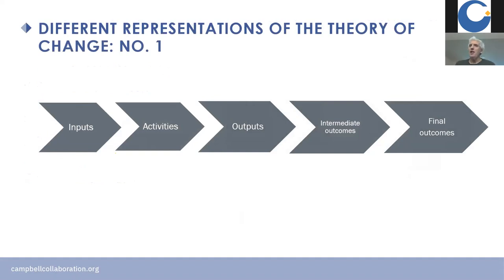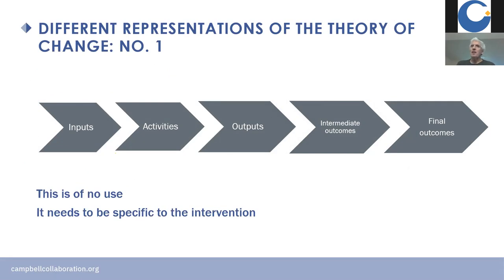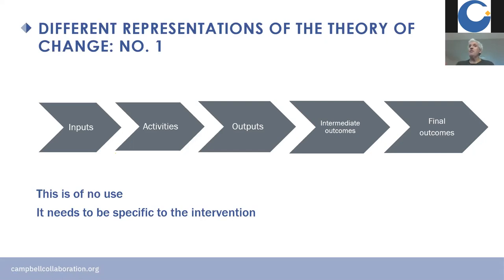Now let's look at different versions of the theory of change. A very simple theory of change — inputs lead to activities lead to outputs to intermediate outcomes to final outcomes — is of no use whatsoever. I used to run a grant-making agency called 3IE where we required grantees to elaborate the theory of change for the intervention they were going to evaluate, and many proposals just had this generic diagram and nothing else. The theory of change needs to be specific to the intervention.